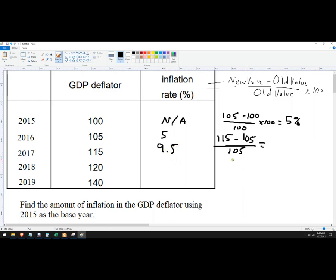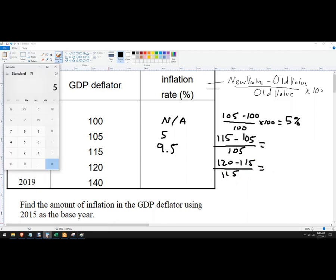120 minus 115 by 115, it's all implied times 100. So that's just 5, 5 divided by 115 is 4.3.